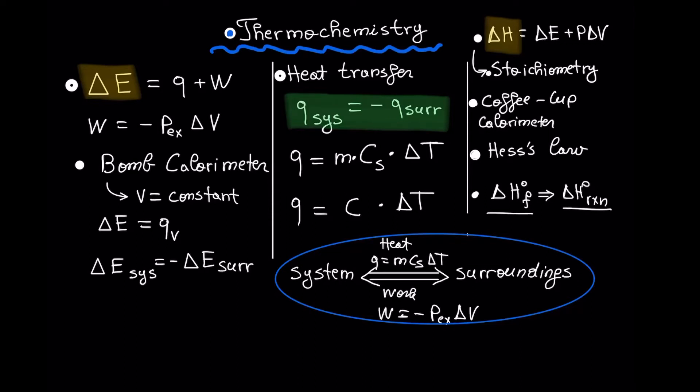In this video I will explain through examples thermochemistry, including internal energy, heat transfer, enthalpy, and change in enthalpy. Here are a bunch of formulas that we are going to use in this video. According to the first law of thermodynamics, change in internal energy is the sum of heat transfer and work done.